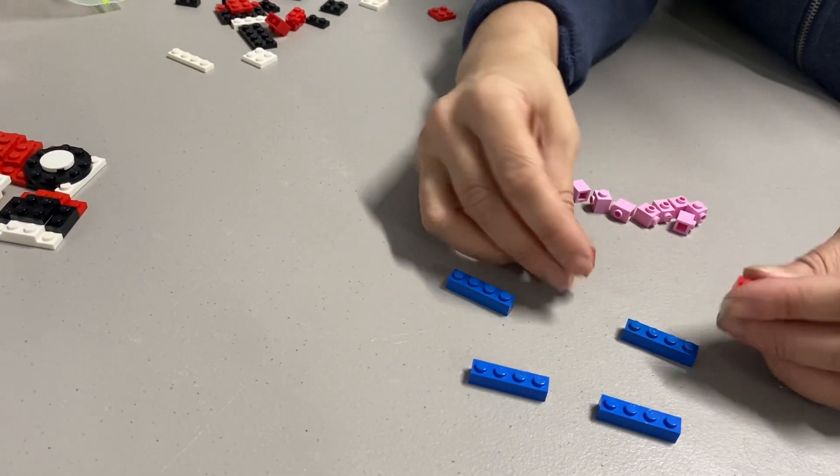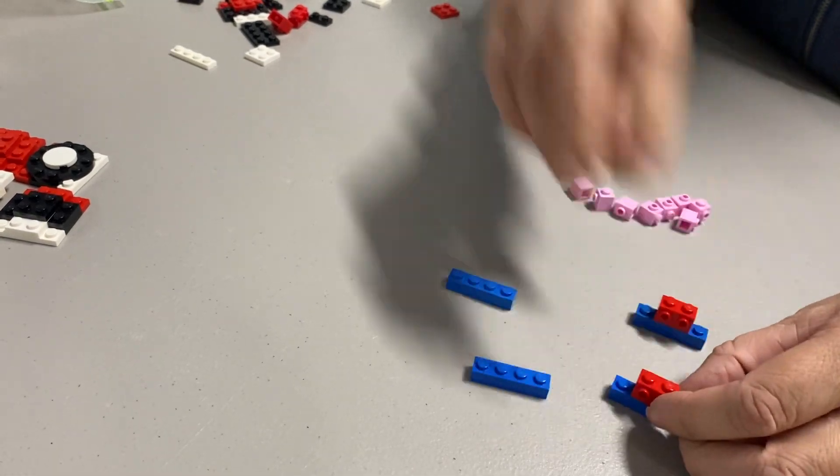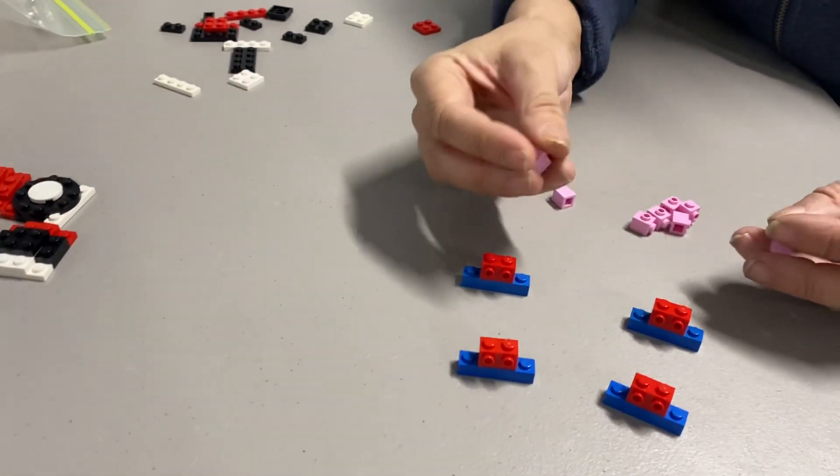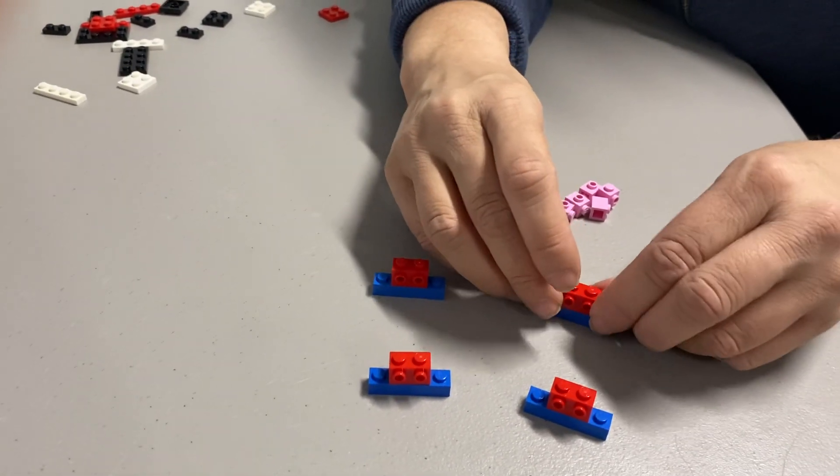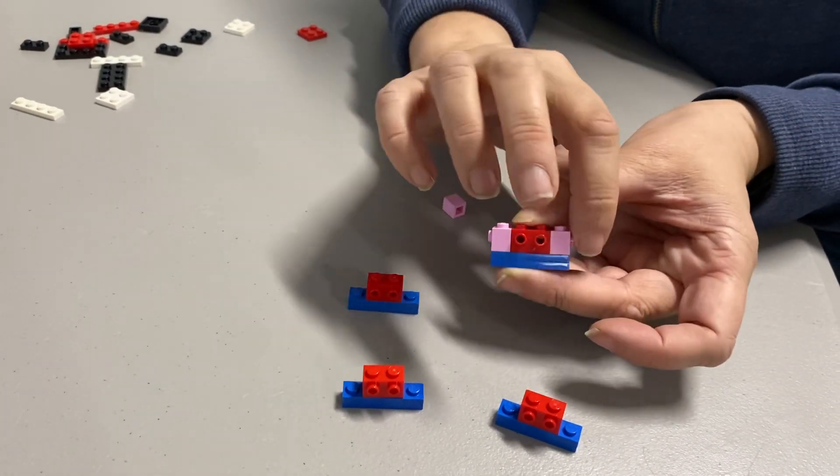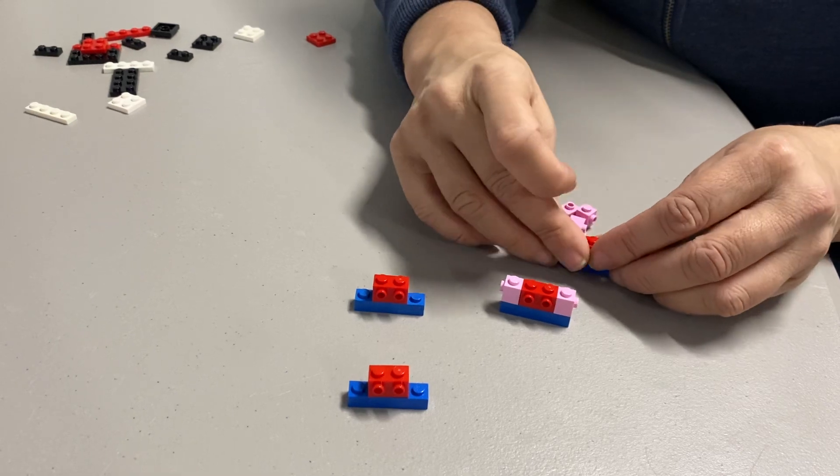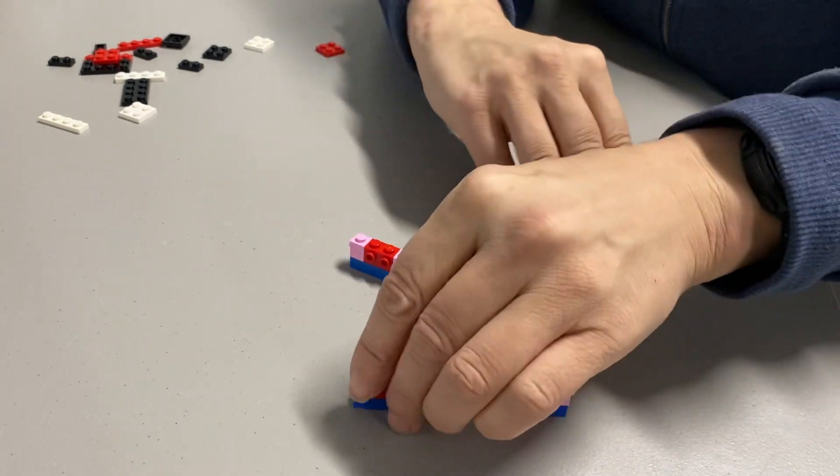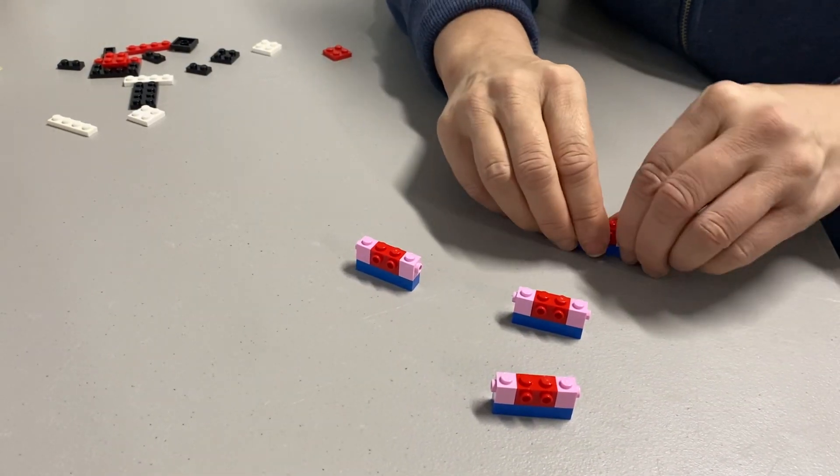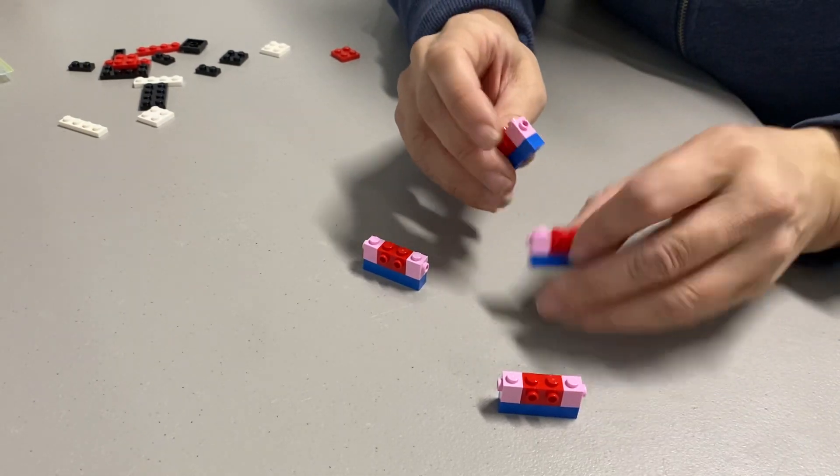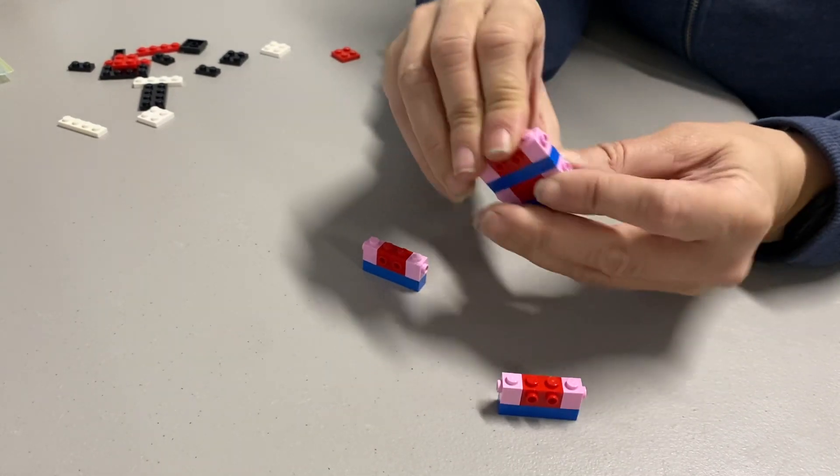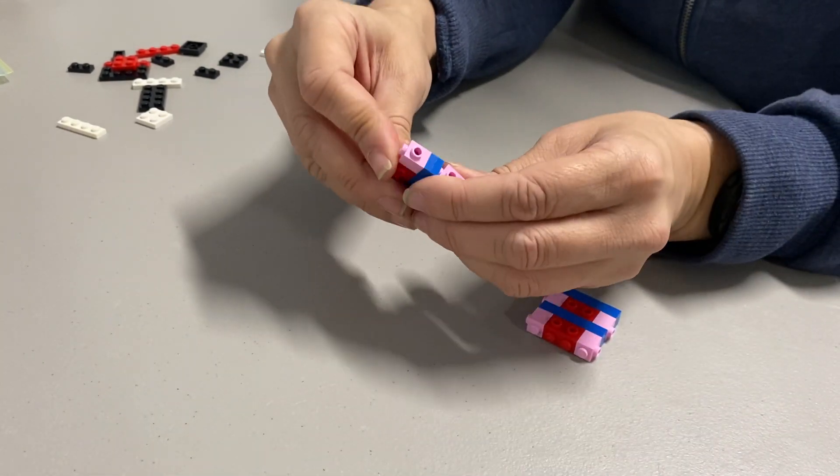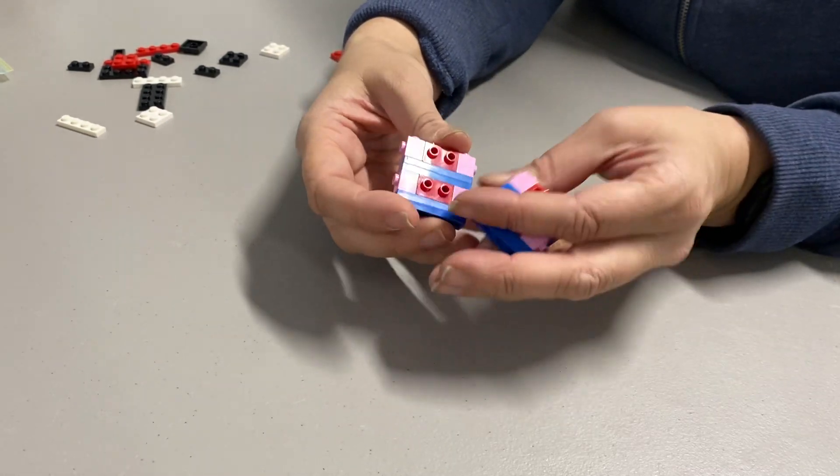We're going to take our one by two bricks with a side stud. We're going to stick it on the middle of the brick. Then we're going to take our one by one and stick them on the ends so that they point out to the sides like this. You do that on all four of these, so you end up with this shape four times. Then you're going to stack them in twos. Make sure that the side studs are the same side on both, so that you end up with this shape two times.